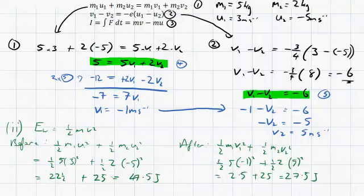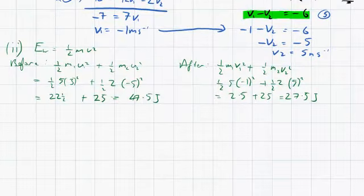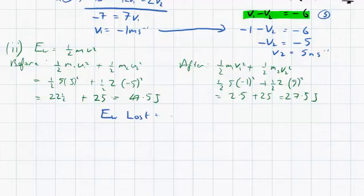So the difference in kinetic energy before and after, or the energy lost, kinetic energy lost, is equal to the before minus the after. So it's 47.5 minus 27.5, which equals 20 joules. And that's our answer for the second part.